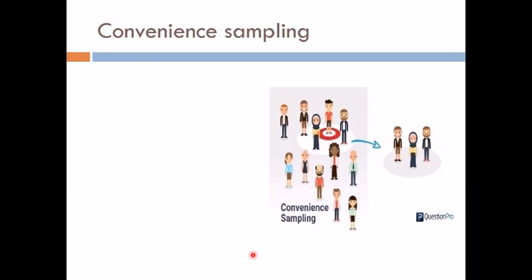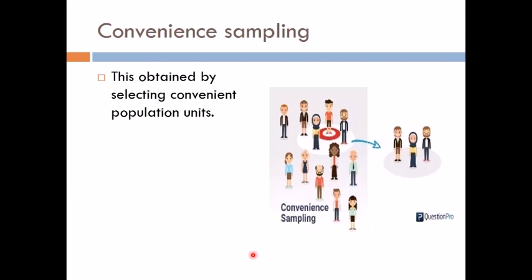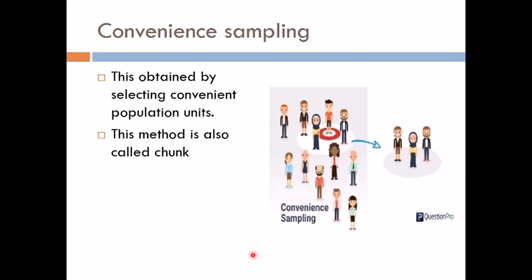The merits and demerits of quota sampling are also left as an assignment. Now we come to convenience sampling. A convenience sample is obtained by selecting convenient population units. This method is also called chunk sampling. A chunk refers to the fraction of the population being investigated which is selected neither by probability nor by judgment, but by convenience. For example, a sample obtained from readily available lists such as automobile registrations or telephone directories is a convenience sample and not a random sample.